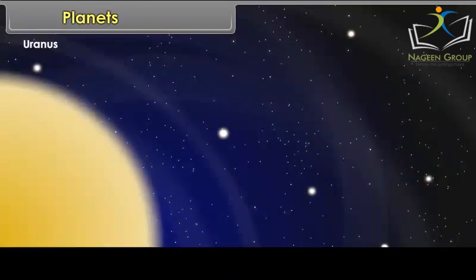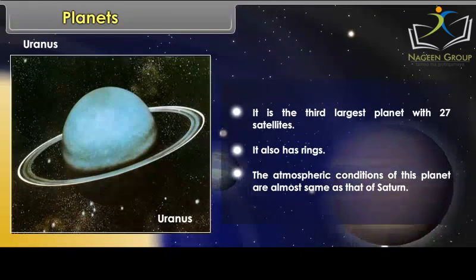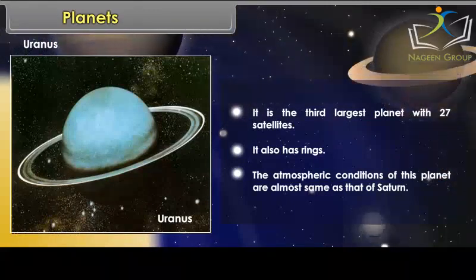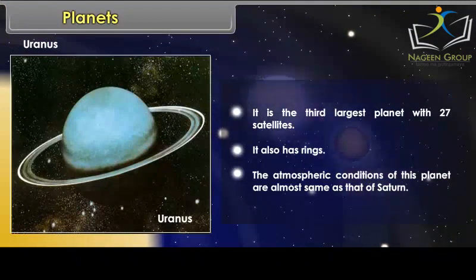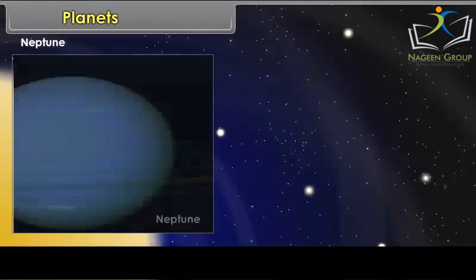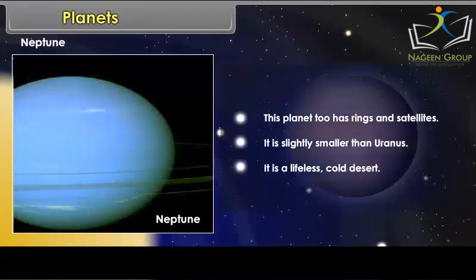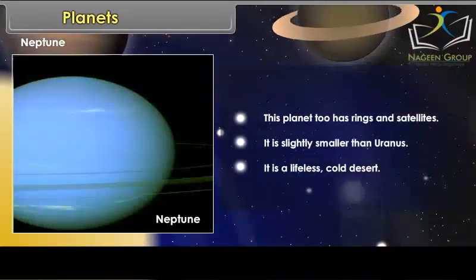Uranus has atmospheric conditions almost the same as that of Saturn. Neptune also has rings and satellites. It is slightly smaller than Uranus and is a lifeless, cold desert.